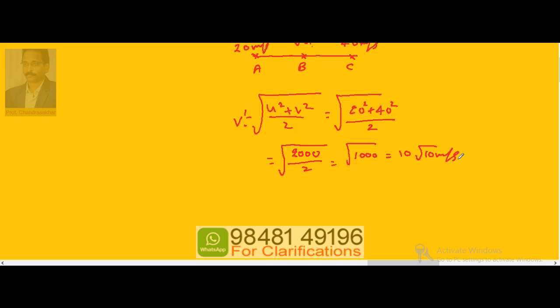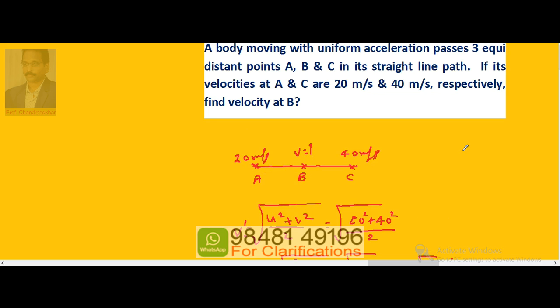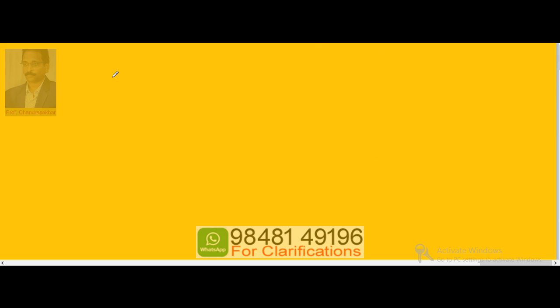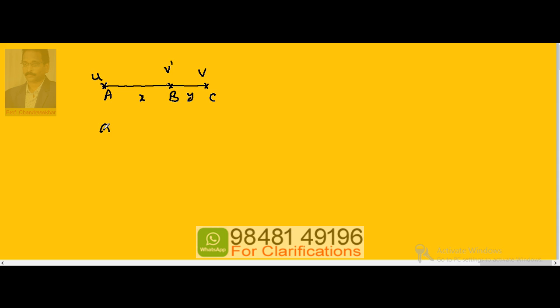Now suppose B is not the midpoint but a point that divides AC in some ratio. So A is the start, C is the end, but B is somewhere in between. Let u be the velocity at A, v at C, and v' at B. The division ratio AB to BC is x to y.